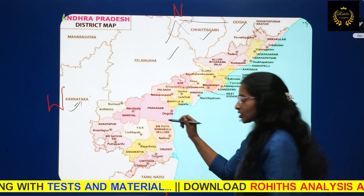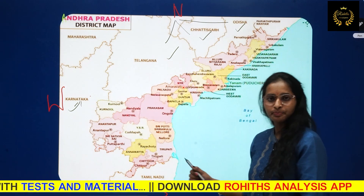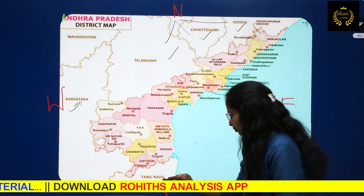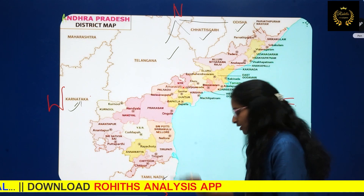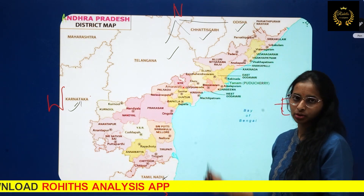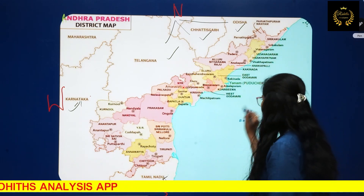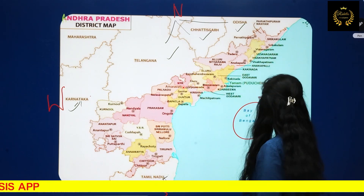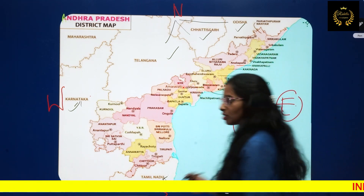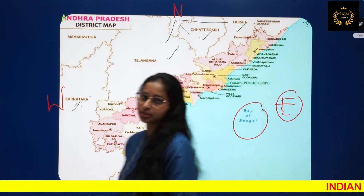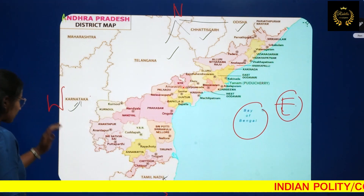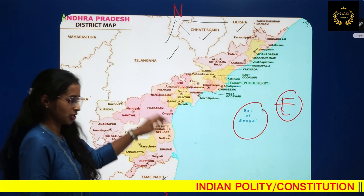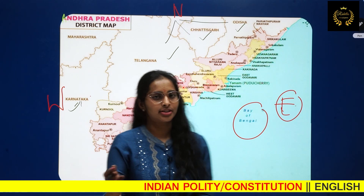Karnataka has the western border with Andhra Pradesh. In the southern part, Tamil Nadu shares the border with Andhra Pradesh. In the eastern part, the Bay of Bengal is present — that is the coastal region. These are the borders sharing with Andhra Pradesh.